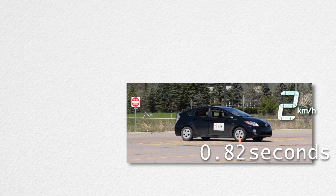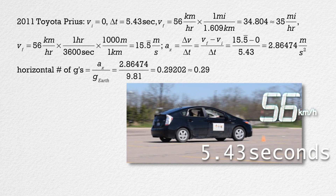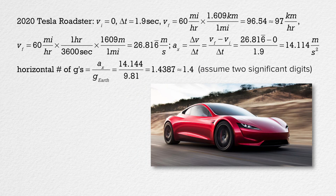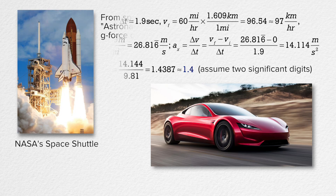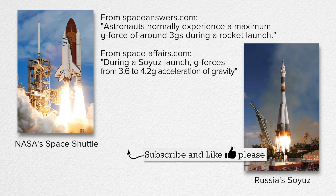Some examples of numbers of g's: my 2011 Toyota Prius can go from 0 to 35 miles per hour in 5.43 seconds, which works out to roughly 0.29 horizontal g's. The new Tesla Roadster, reported to go from 0 to 60 miles per hour in 1.9 seconds, is about 1.4 horizontal g's — downright amazing for a production vehicle. Astronauts in NASA's space shuttle used to experience roughly 3 g's during launch, and the Russian Soyuz rocket experiences roughly 4 g's during launch. Thank you very much for learning with me today.